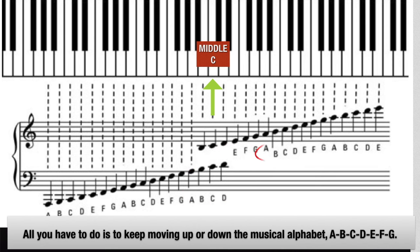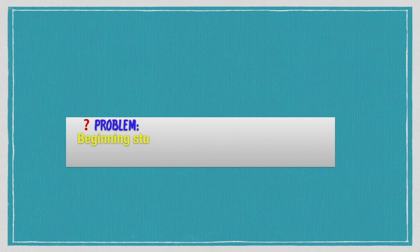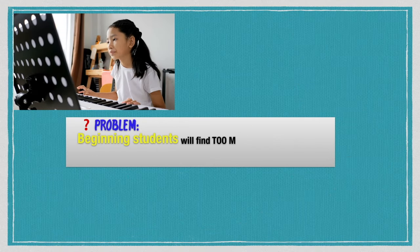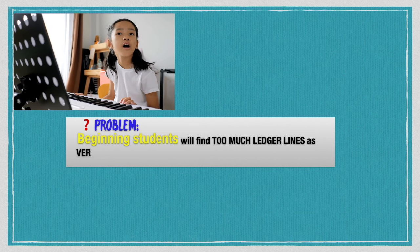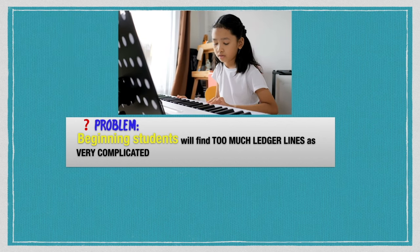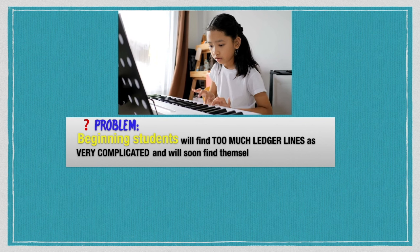The musical alphabet is A, B, C, D, E, F, and G. Another problem is that beginning students will find too many ledger lines very complicated and will soon find themselves confused.